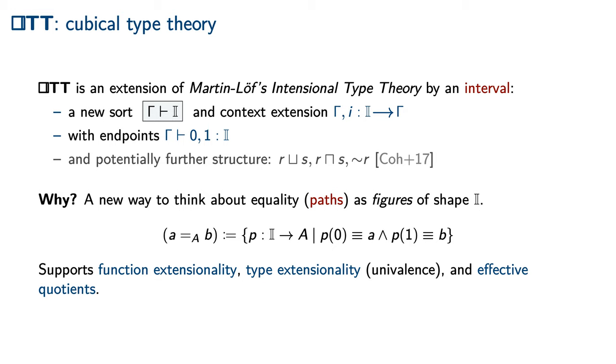This geometrical interpretation of equality has much better properties than equality in previous versions of Type Theory, including both Intentional Type Theory and Extensional Type Theory. Like ETT, Cubical Type Theory supports function extensionality. Unlike Extensional Type Theory, however,